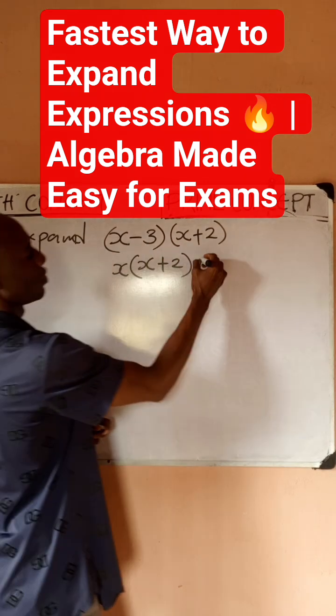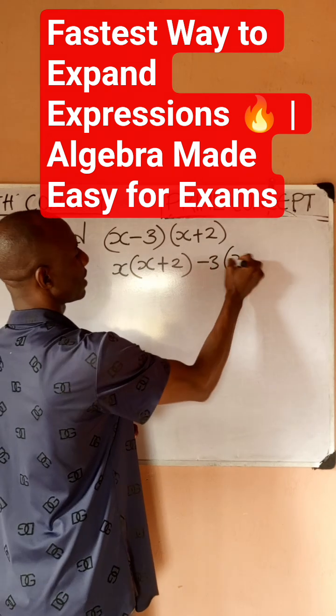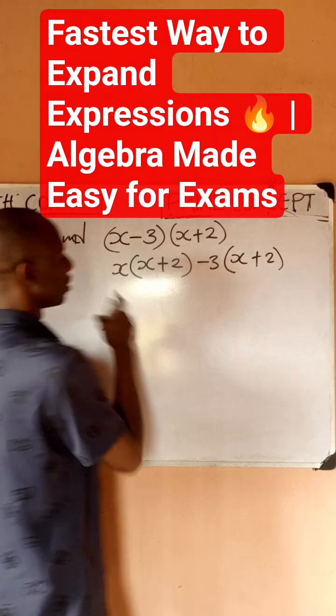You pick the next variable, which is minus 3. You pair it up with the bracket again, x plus 2. So you do this.